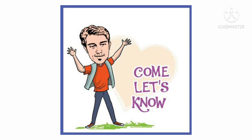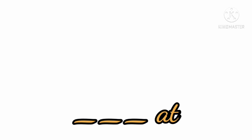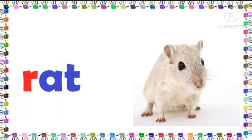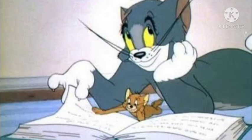Here comes another example of AT family words. I have given you a dash followed by A-T, and here is the picture. Tell me, children, whose picture is it? This is an animal. Think, think — absolutely, it is rat! The spelling: R-A at, R-A-T, rat. R-A-T, rat.